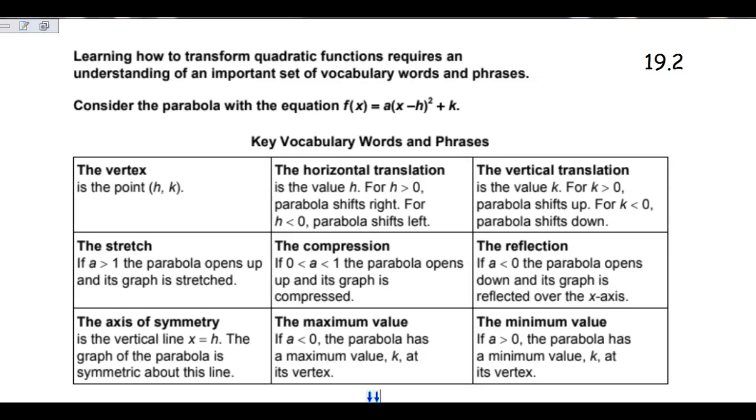So whenever you're looking at these, be aware that because it's not y equals x squared, this is no longer a parent. This is a parabola that has made some changes, and it's either moving up or down, or it's moving left or right. So these are the key vocabulary words and phrases that you're going to be using. The parabola with the equation that's set up like this one, where it's the function of x equals a times x minus h squared plus k.